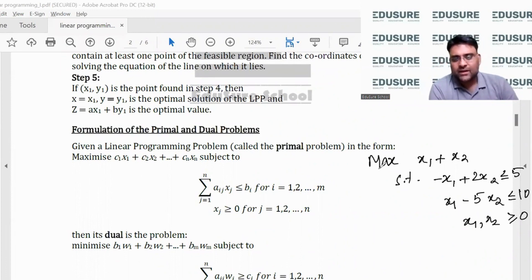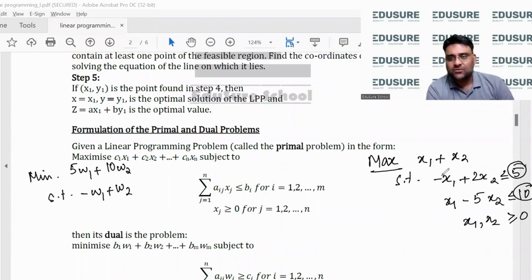What I will be doing is my dual of the primal will be here. The primal was max, so firstly it will be minimize. 5 and 10 were here, so minimize 5w1 plus 10w2 subject to minus w1 plus w2. The coefficient of x1 is minus 1 here and plus 1 there. Here we had less than equal to, so here we will have greater than equal to the coefficient of x1.